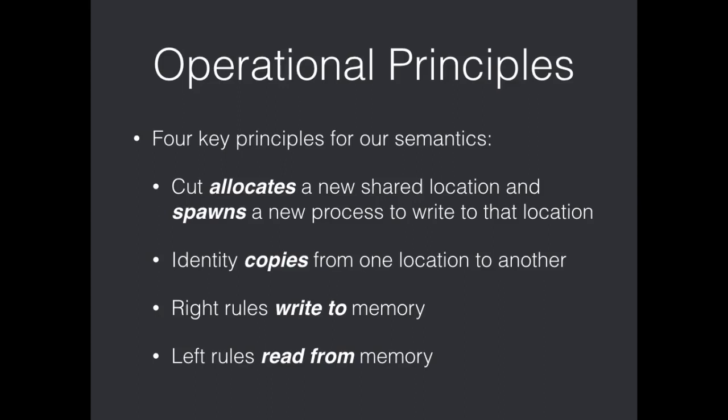So, our rules break down into a couple different cases. We have cut identity right and left rules for different connectives. Cut operationally should allocate a new shared location or shared memory cell. And it will also spawn a new process which will write to that location. Identity will copy information from one cell to another. Right rules will write to memory in a very nice mnemonic fashion. And left rules, dually to the right rules, will read from memory.